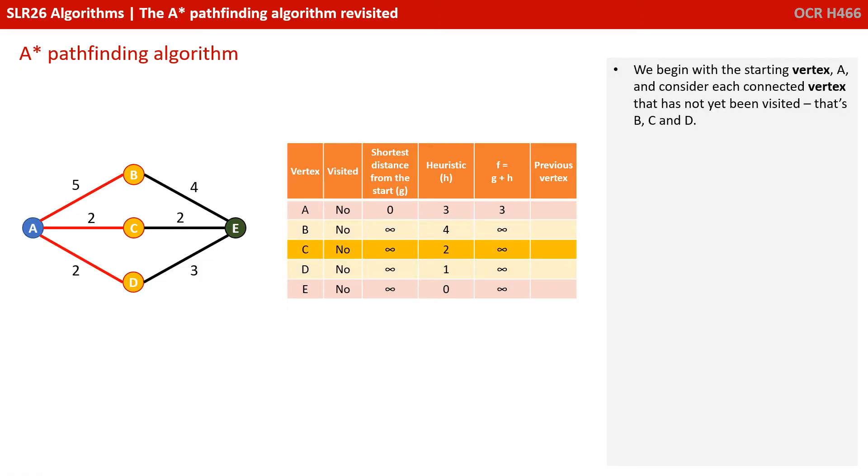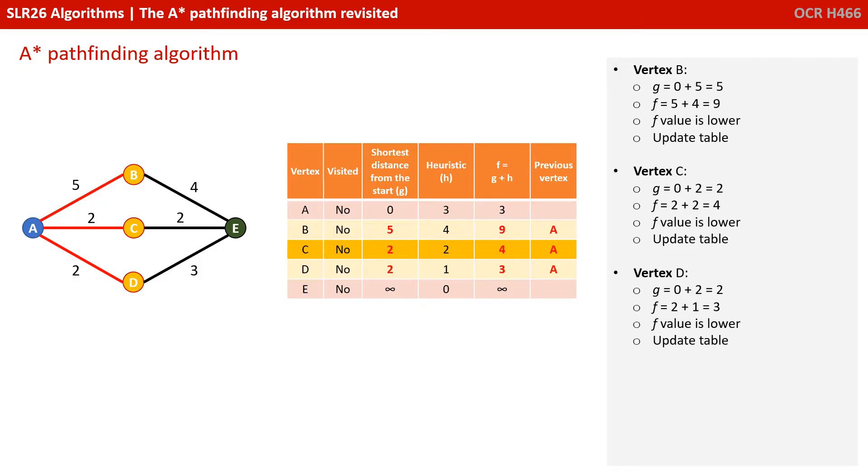We begin with the starting vertex A, and consider each connected vertex that's not yet been visited. So that's B, C and D. We can see that vertex B's G value is 0, that's A's distance from the start, plus the edge value of 5 is 5.